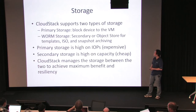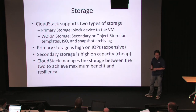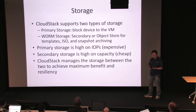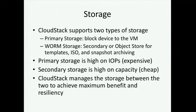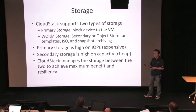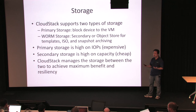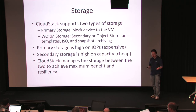CloudStack supports two types — secondary and object store are actually trying to get to the point where they merge together. For primary storage, it's a block device. The main thing about primary storage is it has to be high on IOPS because this is where your VMs are running, so this is the place where you have to spend your money. Whereas secondary storage is a warm storage — write once, read many times — and that maps very well to the object store concept.